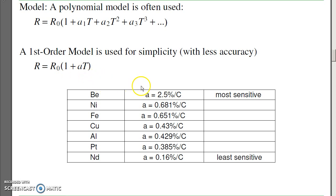If you are using beryllium, that's the metal that's the most sensitive to temperature changes. Neodymium is the least sensitive, and typically we use copper. For copper, the resistance changes by 0.43% per degree C.